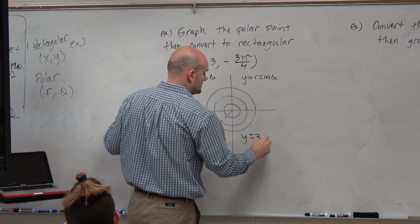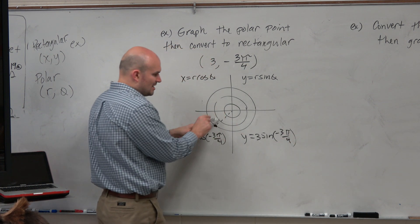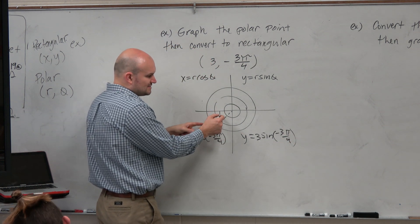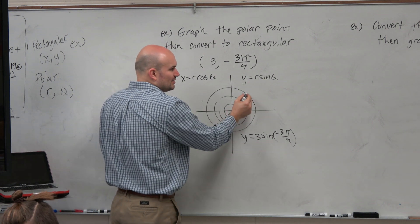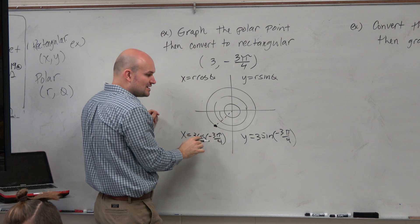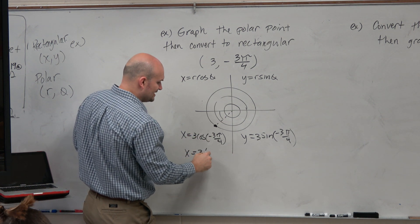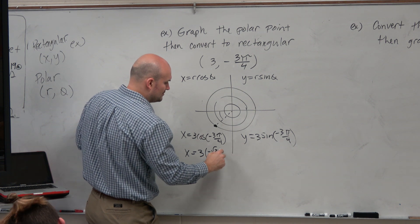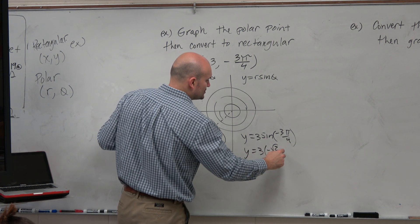So 3 times the sine of negative 3 pi over 4. Now, the nice thing about negative 3 pi over 4 is, do we know what the reference angle is? Pi over 4. Pi over 4. So do we know what that coordinate point pi over 4 is? Square root of 2 over 2, square root of 2 over 2, but it's in the third quadrant, so that means they're both negative. So that's 3 times negative square root of 2 over 2. And this one is y equals 3 times negative square root of 2 over 2.